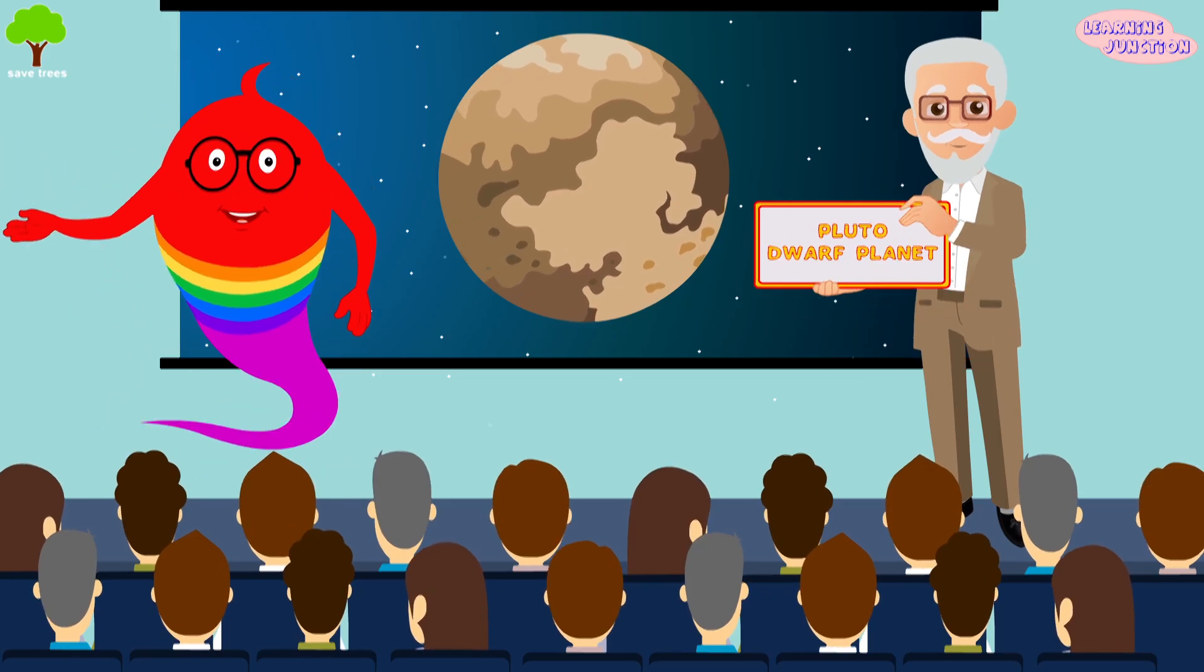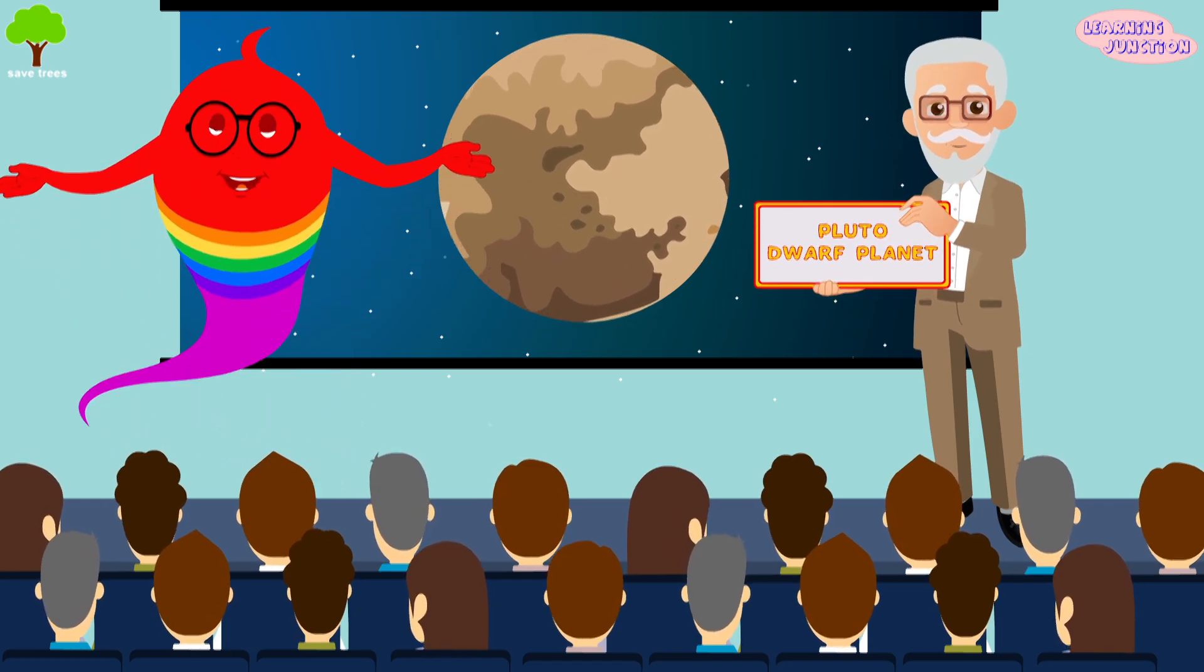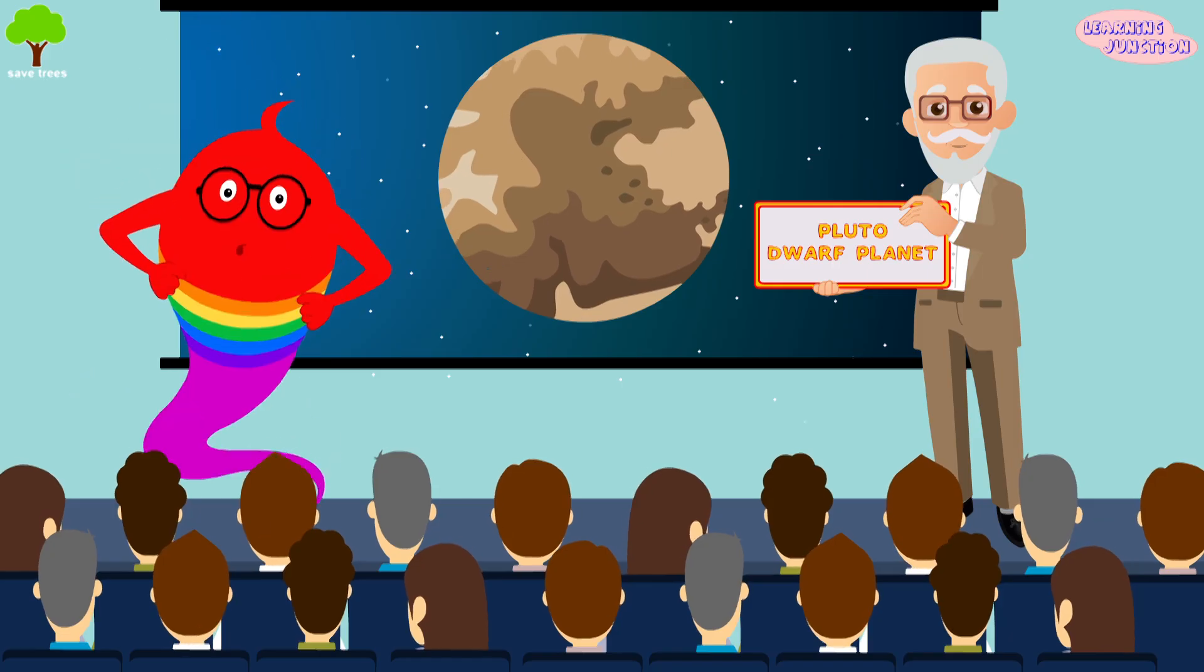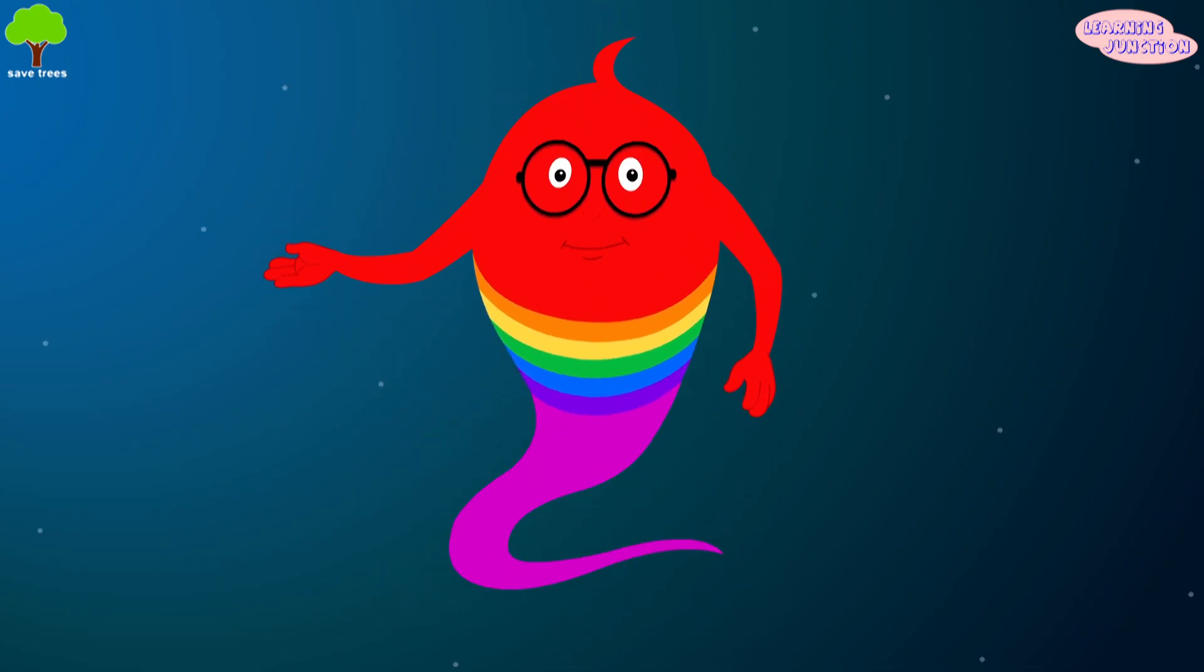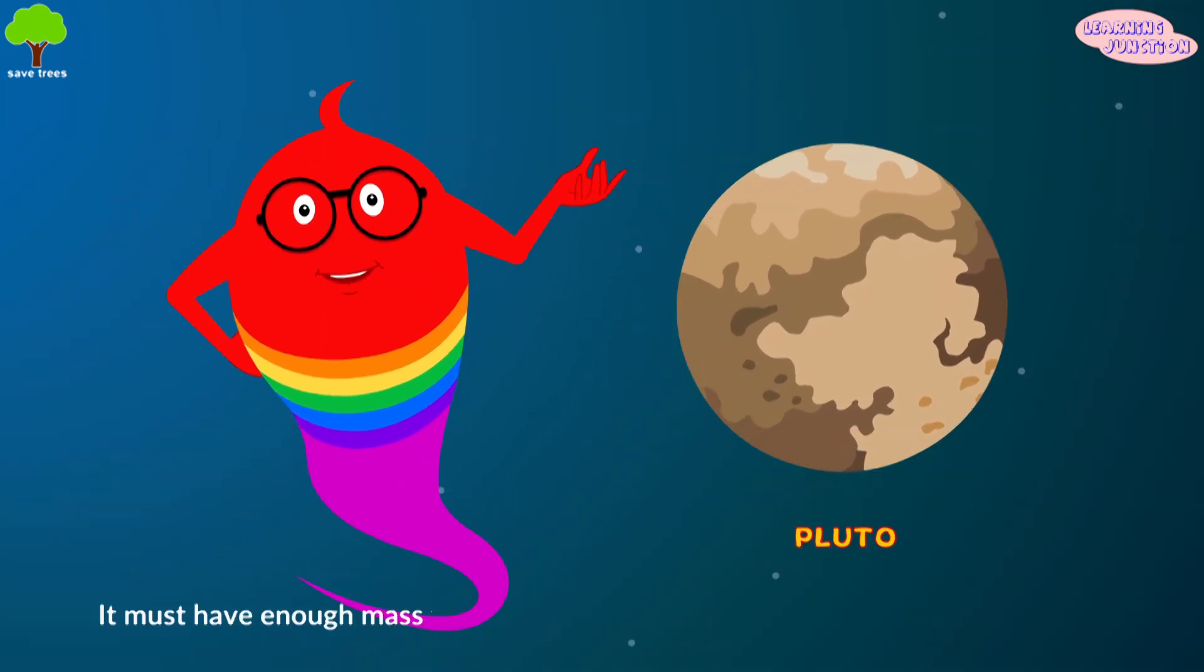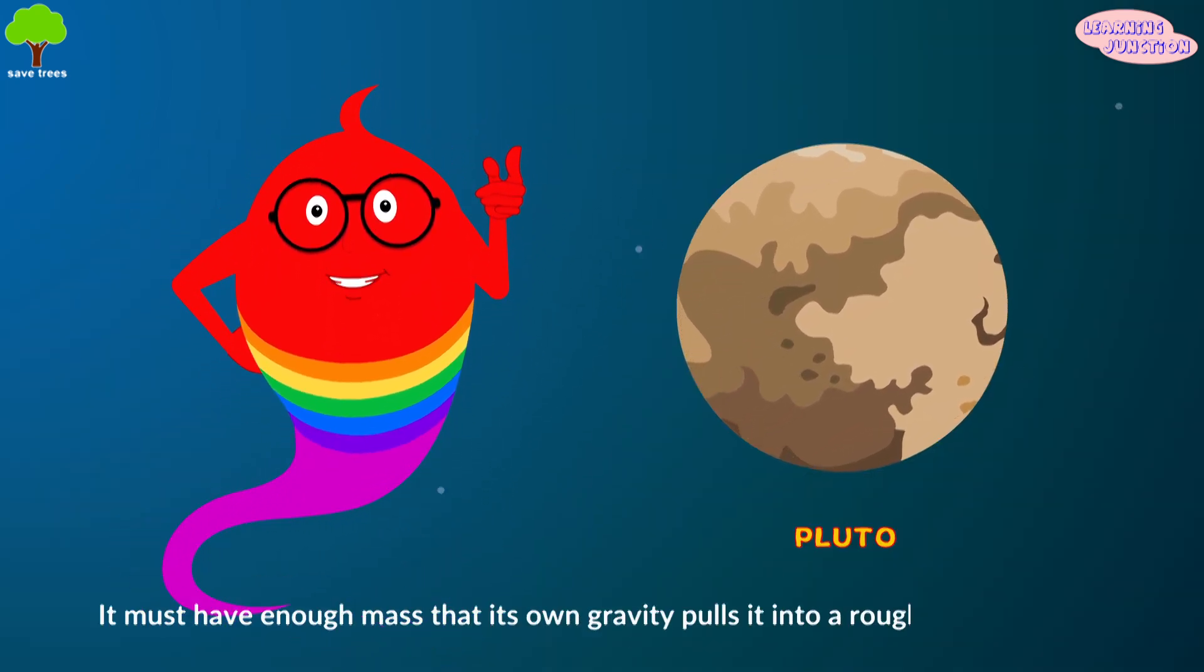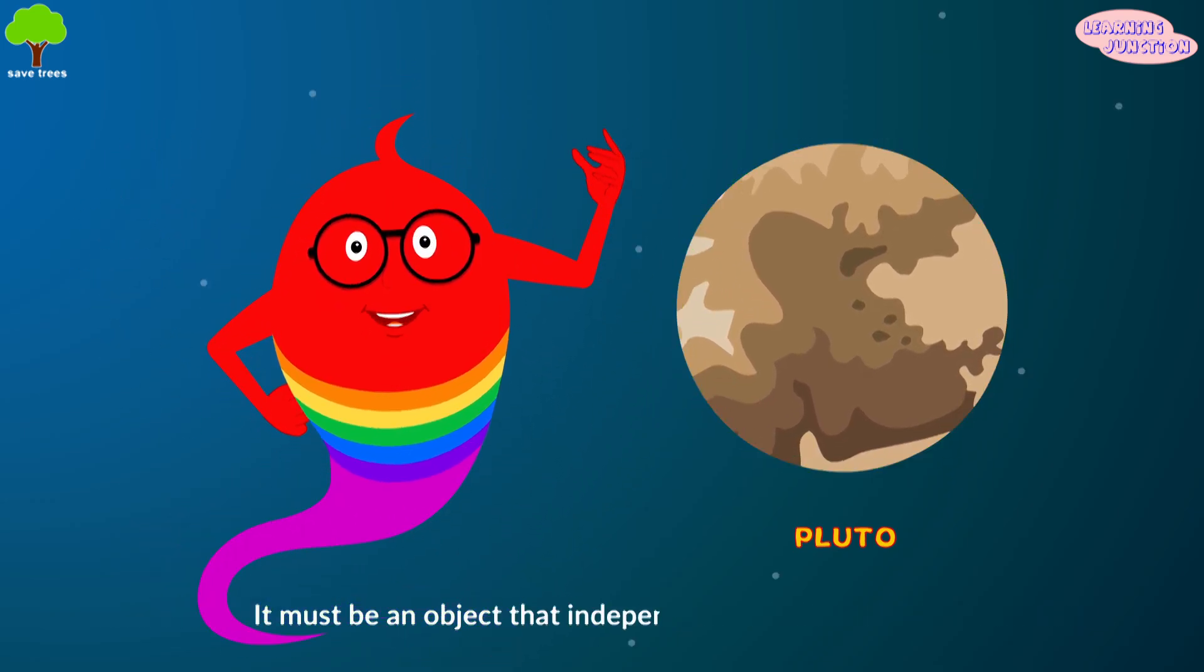In August 2006, the IAU, International Astronomical Union, downgraded the status of Pluto to that of dwarf planet. The IAU defined a planet as an object that, first, must have enough mass that its own gravity pulls it into a roughly round shape. Second, it must independently orbit the Sun.